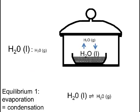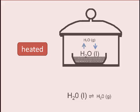Similarly, let's say we have a system involving liquid and vapor water in dynamic equilibrium under certain conditions. That means that the rate of condensation and evaporation are constant over time.